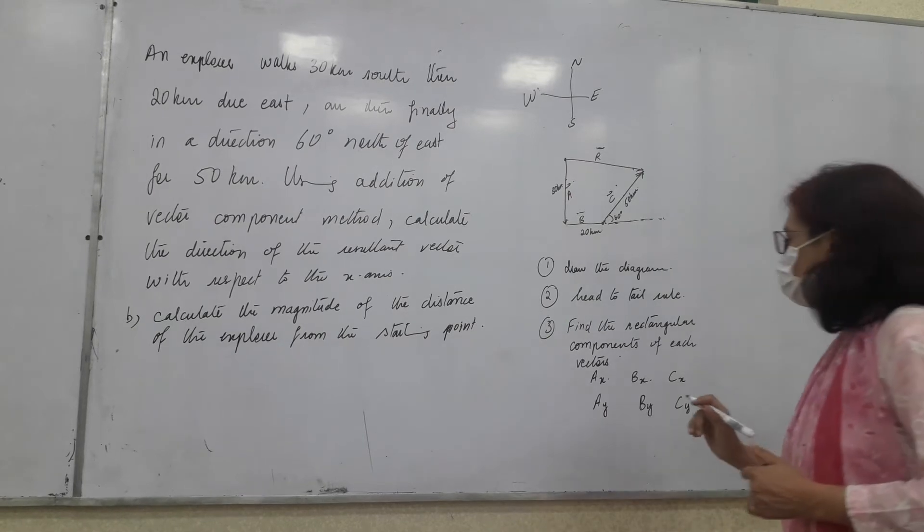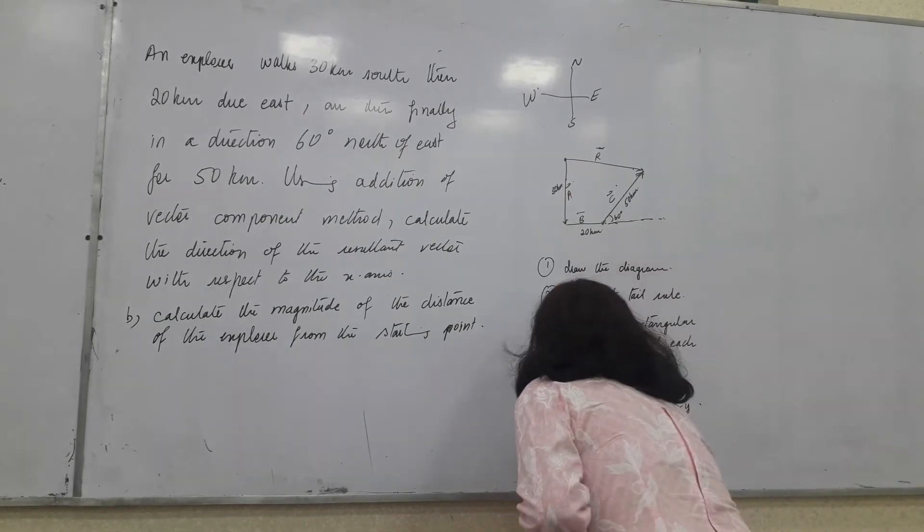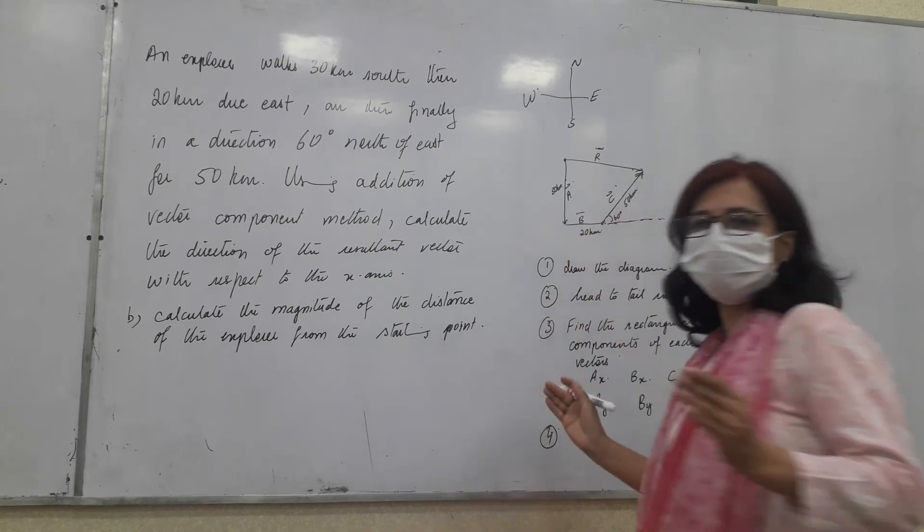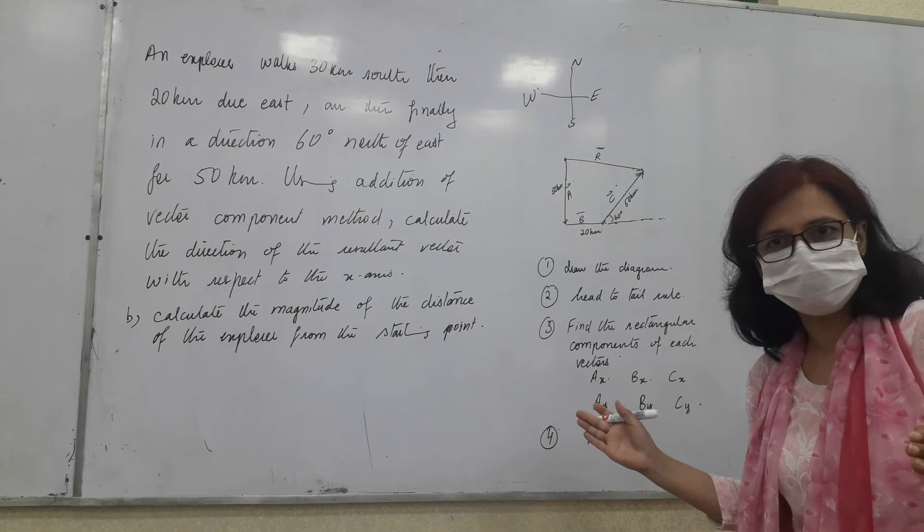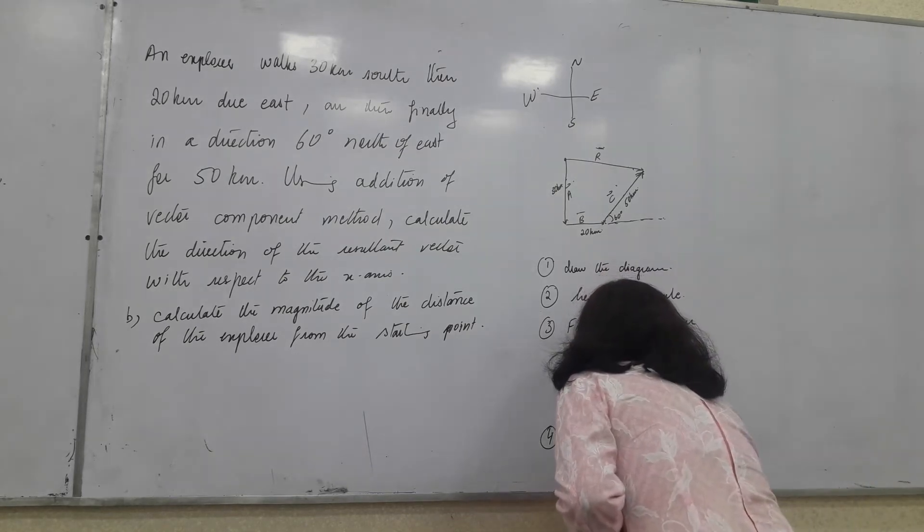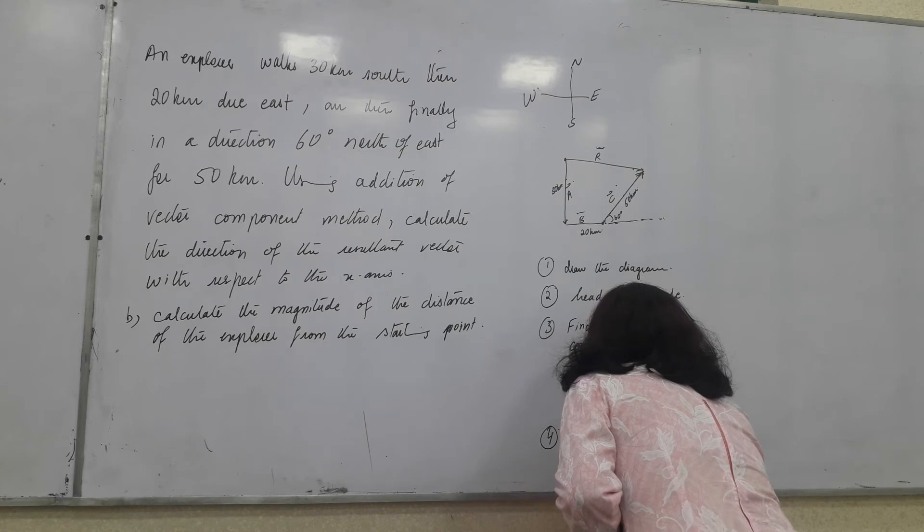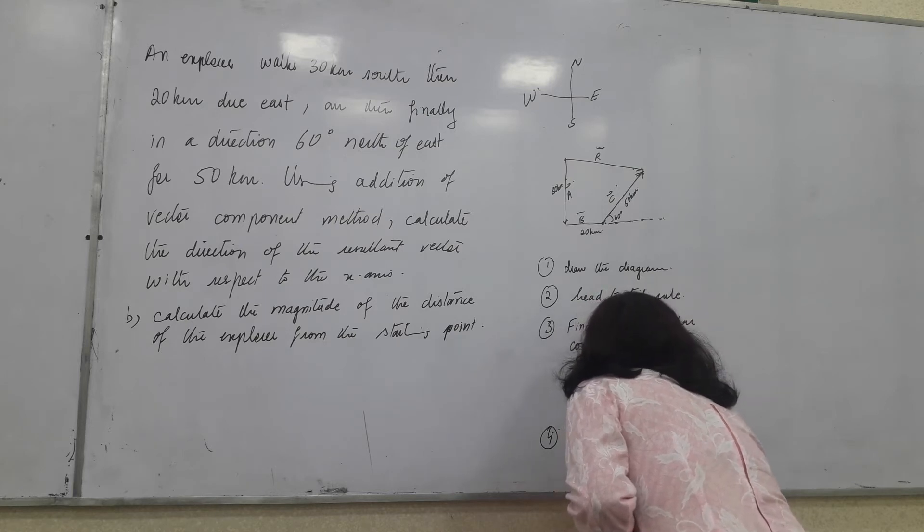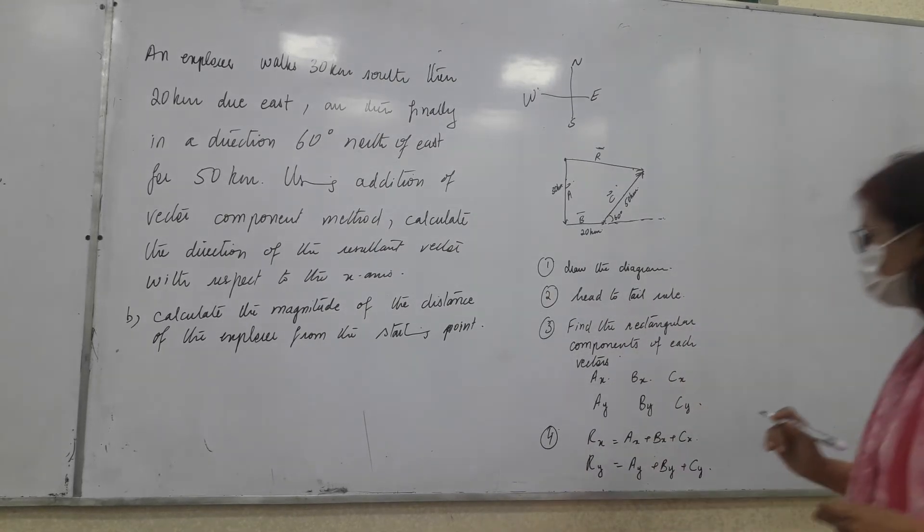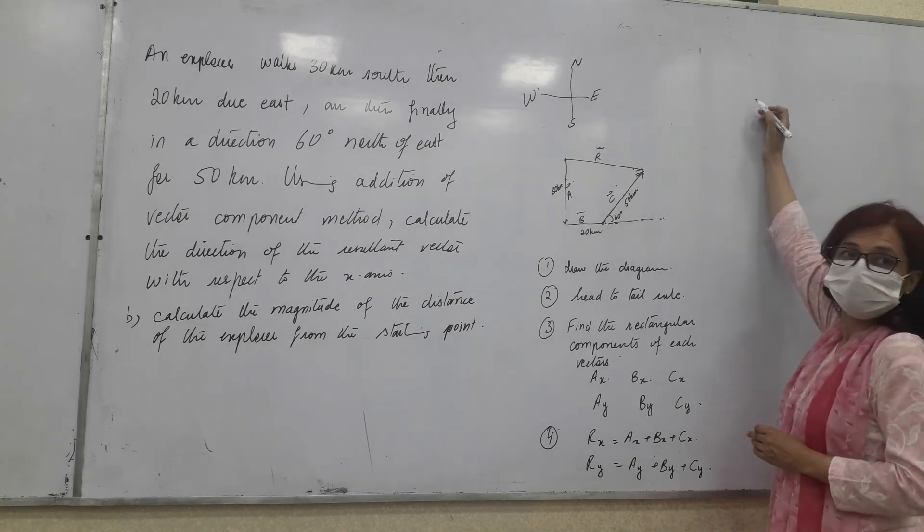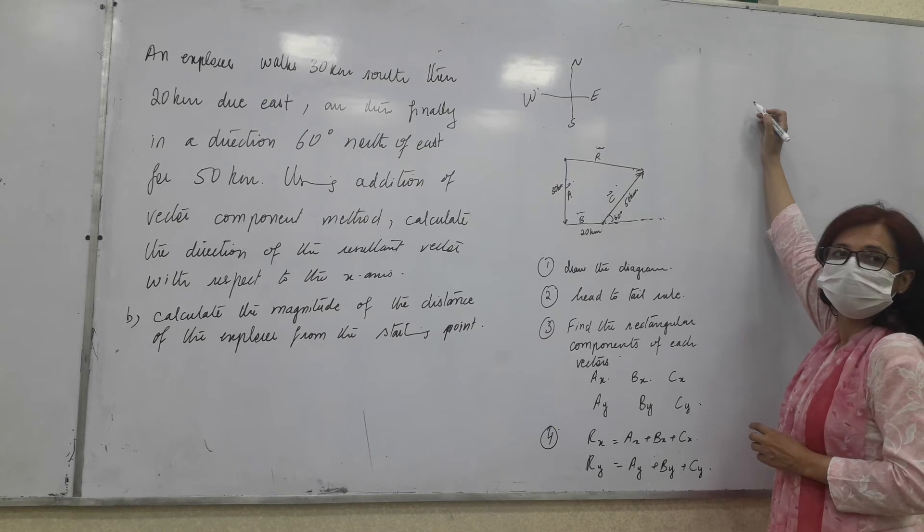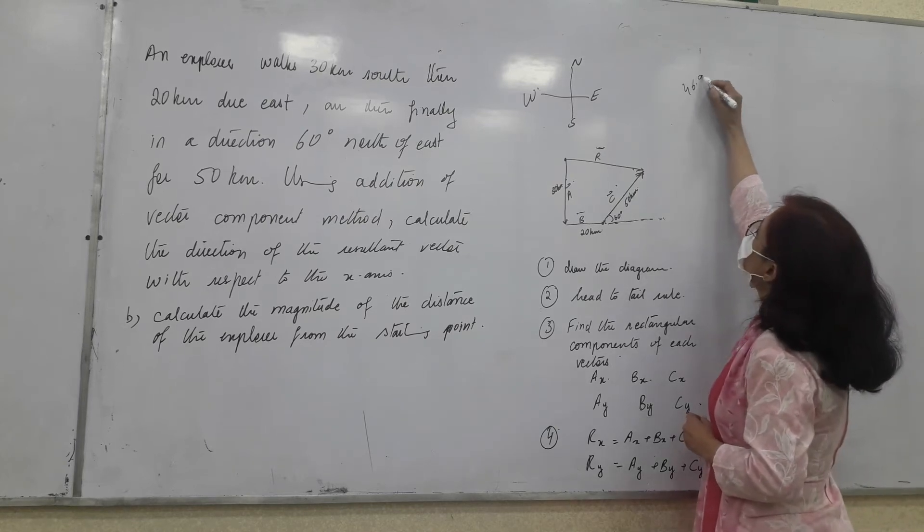We will use this formula. So, the x component of the resultant is equal to the sum of the x components of each of these vectors. Right? So, Rx is equal to Ax plus Bx plus Cx, which is equal to 45.9. Ry is equal to Ay plus By plus Cy. Right? I solved it. Did you reach the answer? What's your answer? For magnitude, the answer is 46.9 km.